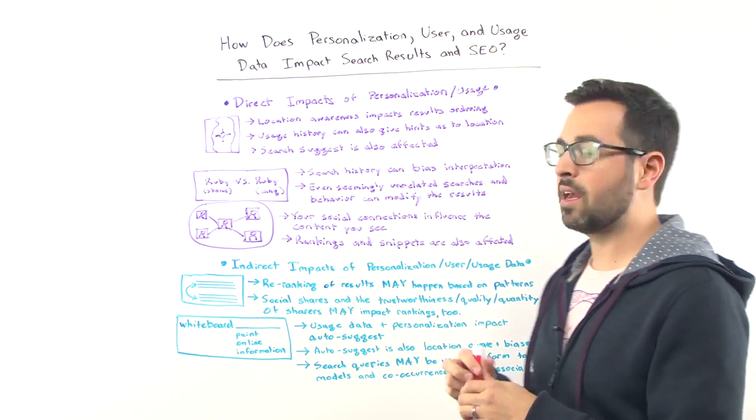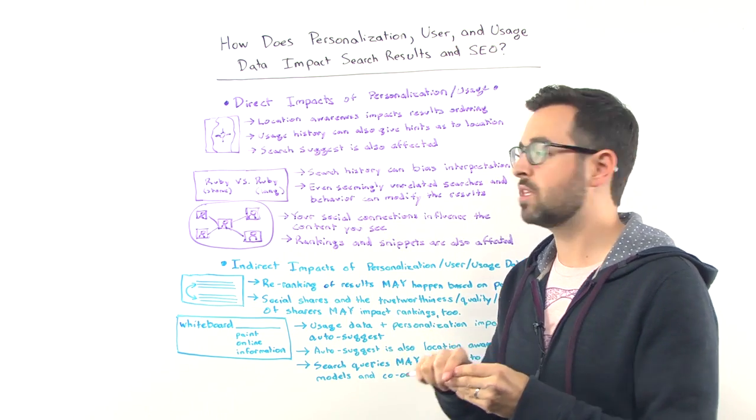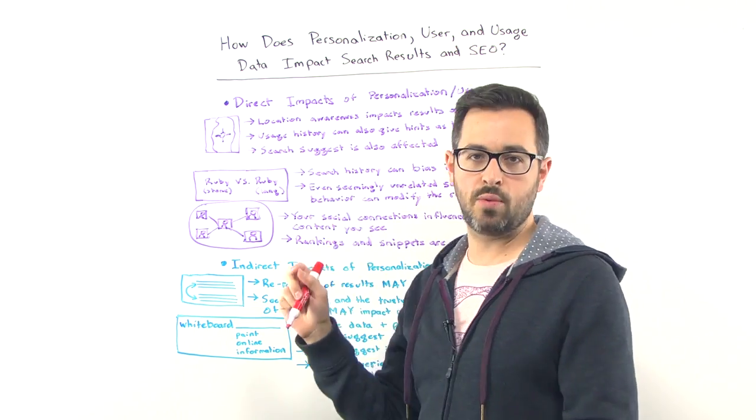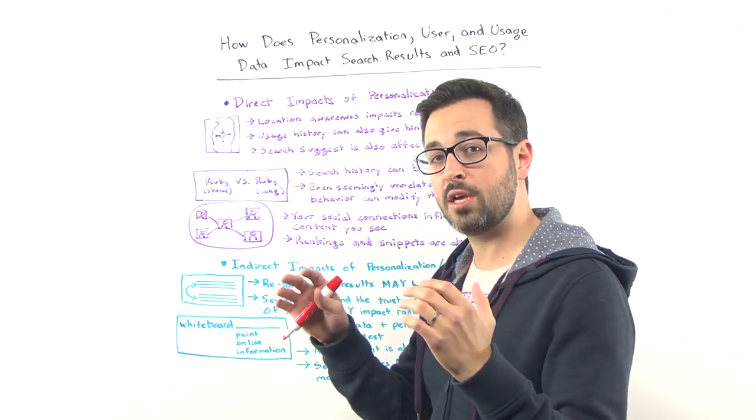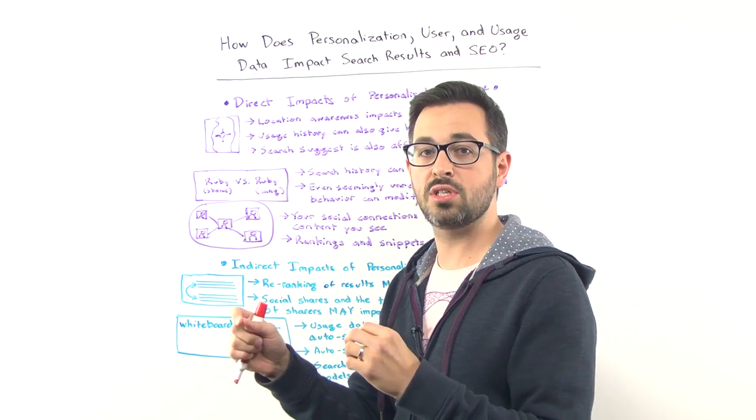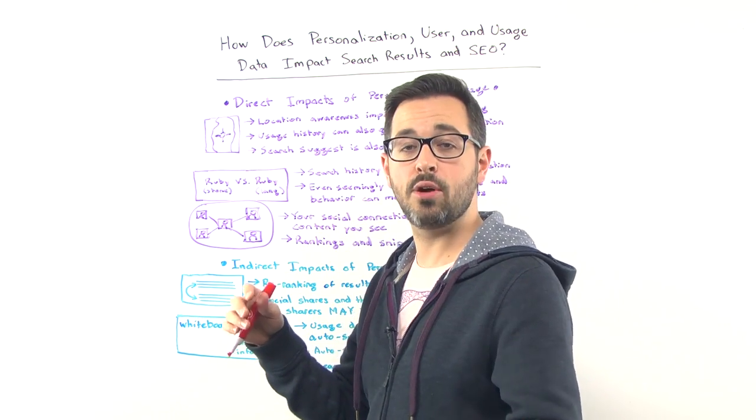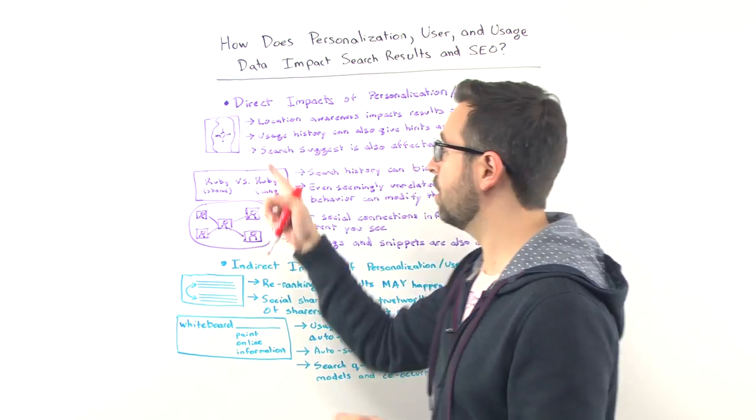In these direct impacts, one of the most important ones to think about is location awareness. This is particularly important, obviously, if you're serving a local area, but you should be aware that location biases a lot of searches that may not have intended to be local simply by virtue of their geography.